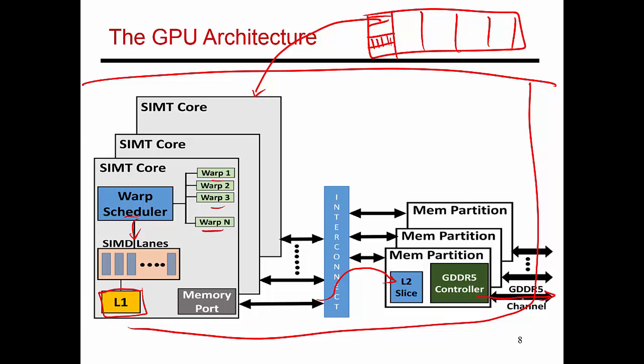The external memory in a GPU uses better technology than what you see in standard processors. Standard processors use DDR3 or, more recently, DDR4 technology, whereas the graphics memory is lower latency, higher bandwidth. It's one generation ahead of the regular memory that you see in traditional processors. It uses what is called GDDR5 technology. You go over a GDDR5 channel to access your external memory system.